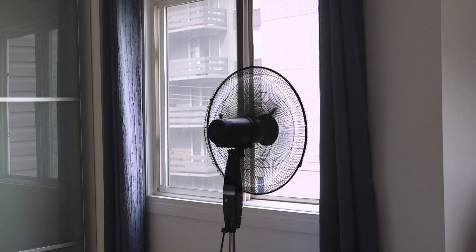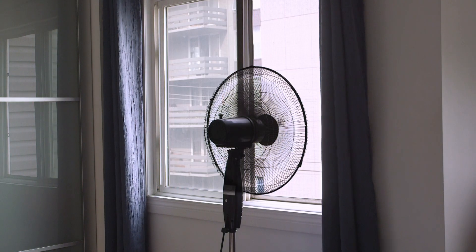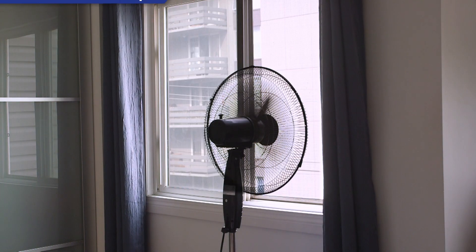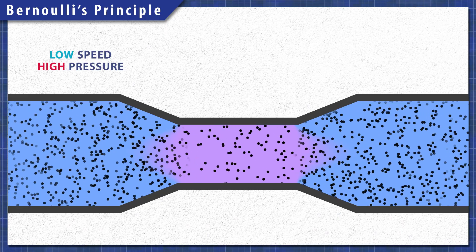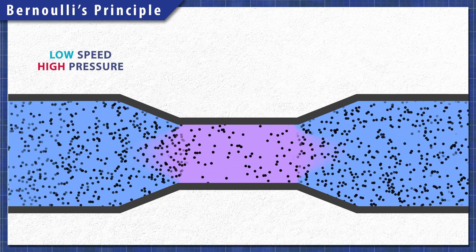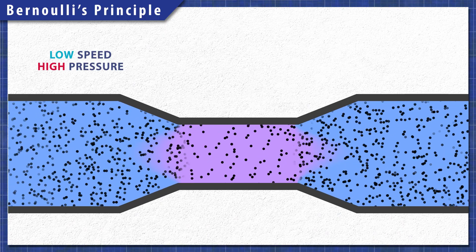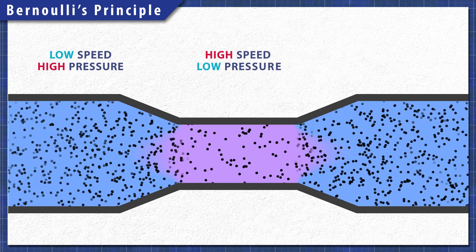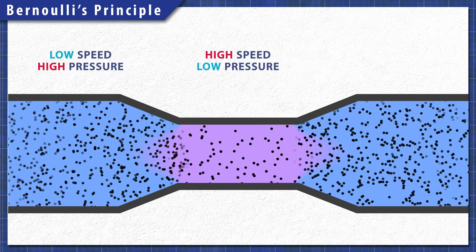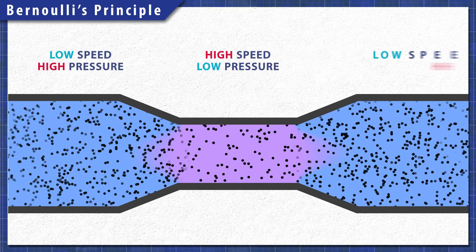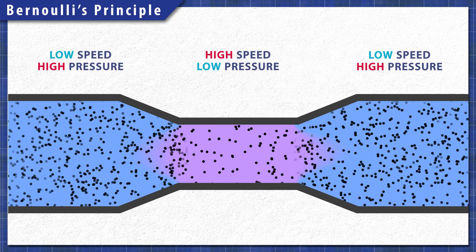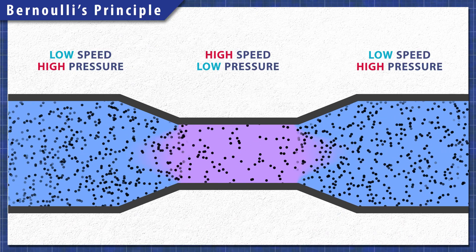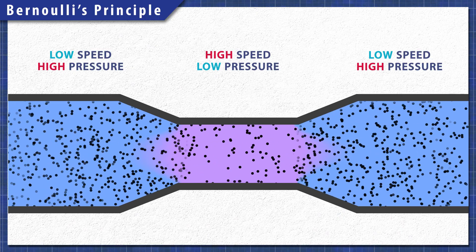You might think that placing a fan right next to the window will result in the most air flow. In reality, this isn't completely true when you consider physics. Bernoulli's principle describes the relationship between the speed and pressure of any fluid. When the speed of a fluid increases, its pressure decreases, and when the speed decreases, its pressure increases. This is the very same principle that allows airplanes to fly.